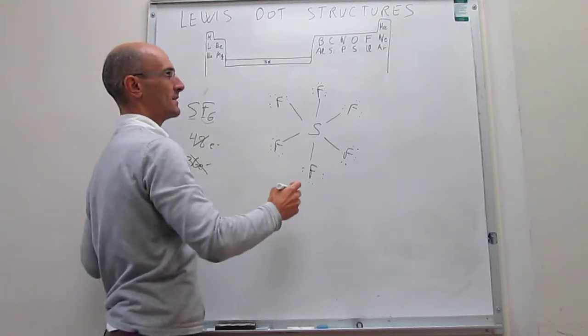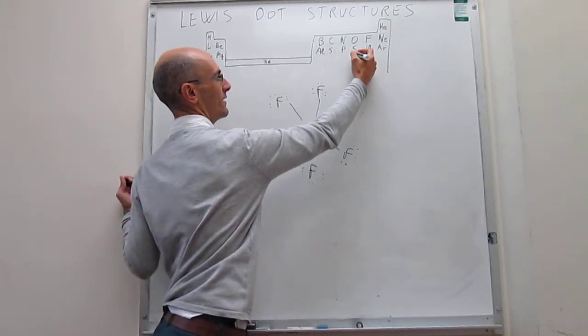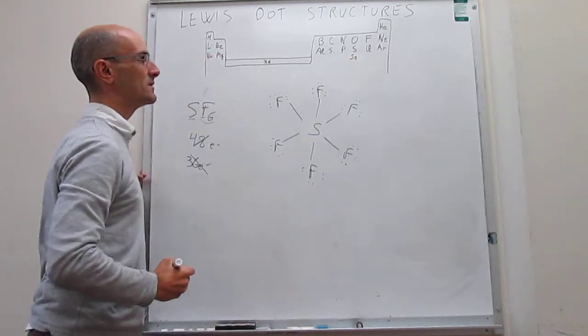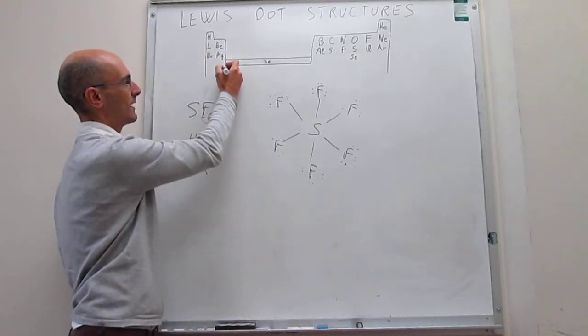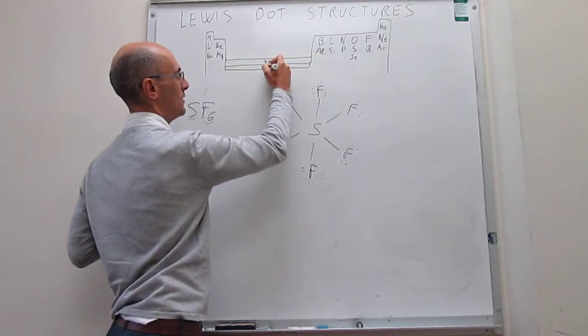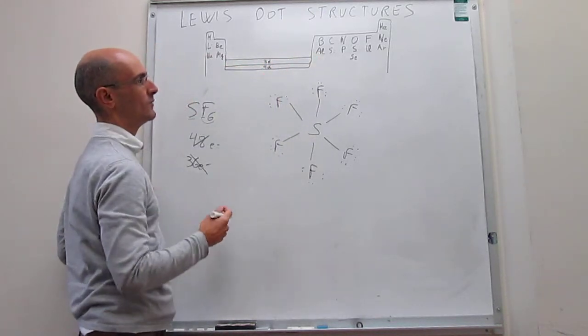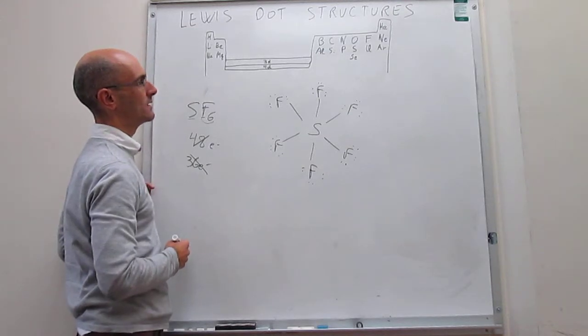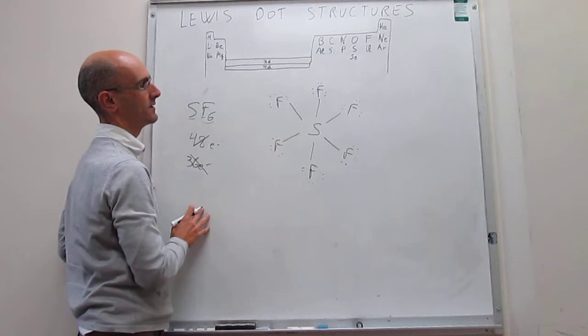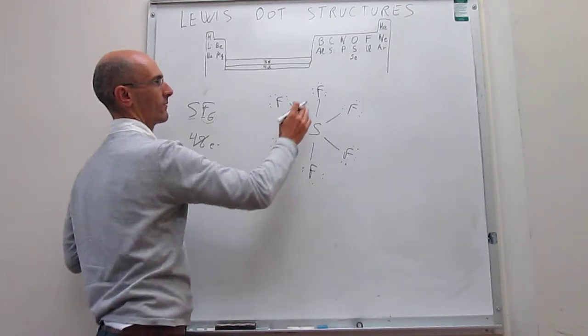That would be exactly the same if you go one lower in the row. So you have here selenium. In principle, that seems that you could have something like that. But in that case, you would have that empty 4d orbitals would be utilized to fill those, to have the expanded octet.